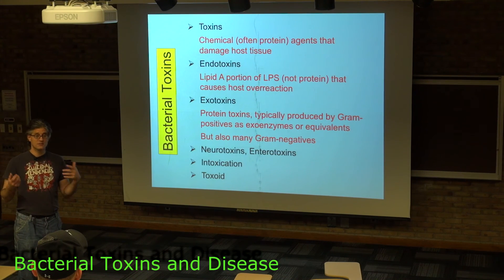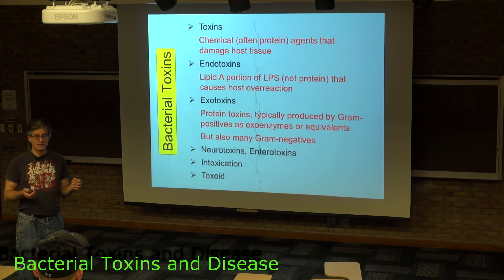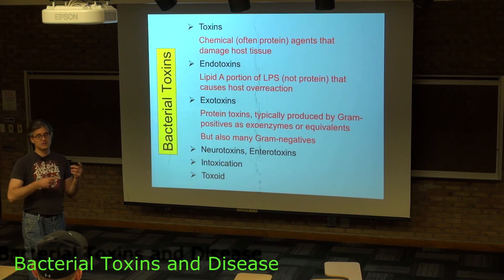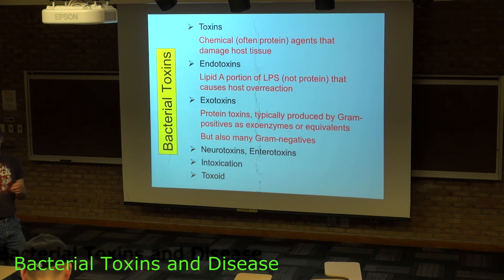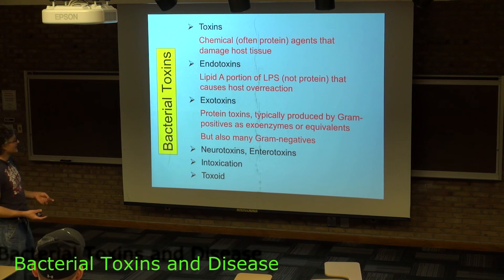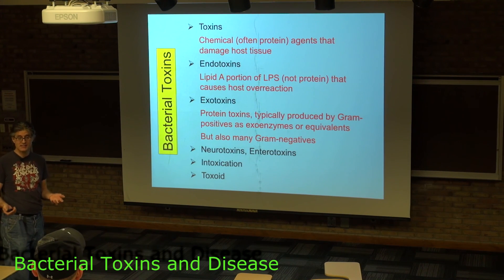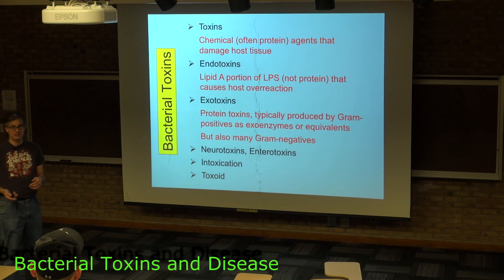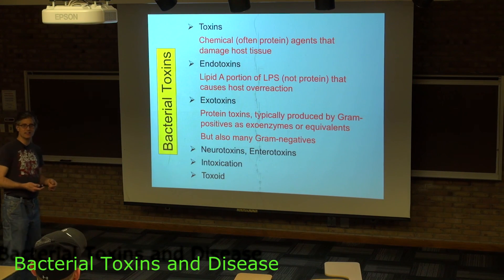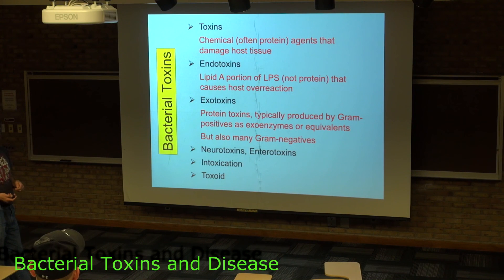Tetanus is caused by Clostridium tetani, and it is caused by an exotoxin. The tetanus toxin can be inactivated in terms of its ability to harm our tissues, but not so much that our immune system can't recognize it. So we build up antibodies against the toxin, and if we're ever exposed to tetanus toxin, we can inactivate it before it causes harm. But the antibodies wear off, so we have to boost our tetanus — we need a tetanus shot every 10 years or so to boost our antibody numbers.